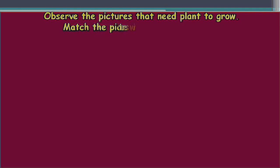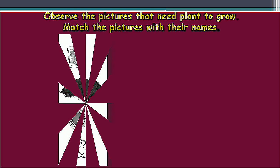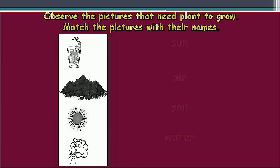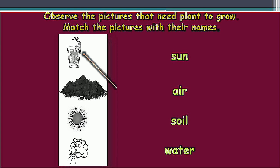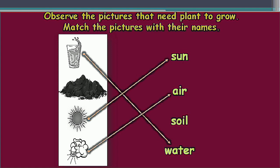Next activity: observe the pictures that show what plants need to grow, and match the pictures with their names. Left side has pictures, right side has their names. First one is very easy to identify — water. Next is sun. Then air. The remaining one is soil.